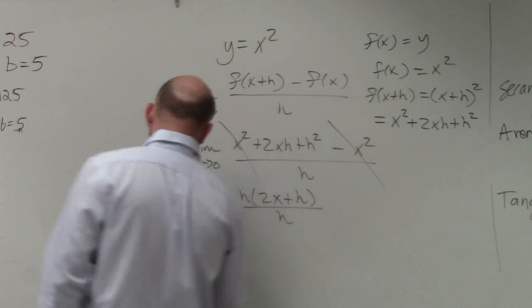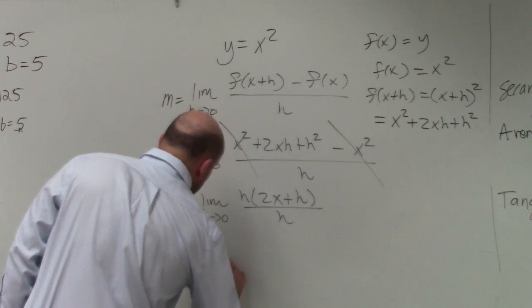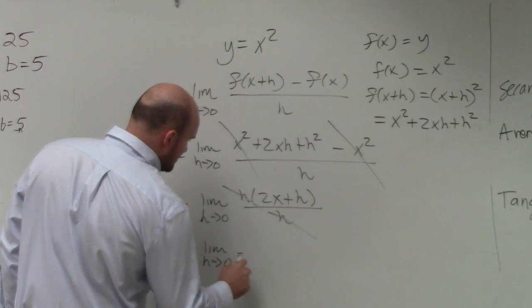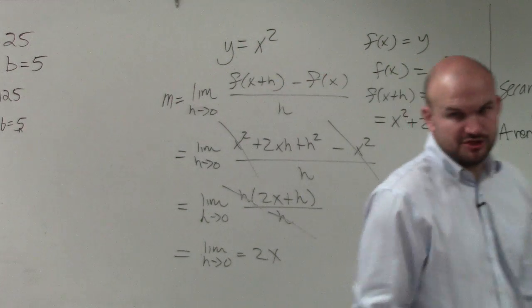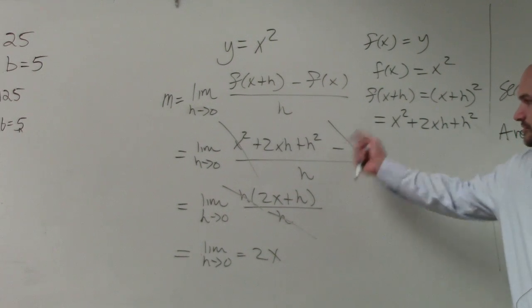Therefore, the limit as h approaches 0, as my h's now divide out, is just going to be left with 2x, because as I now apply direct substitution, h is 0.